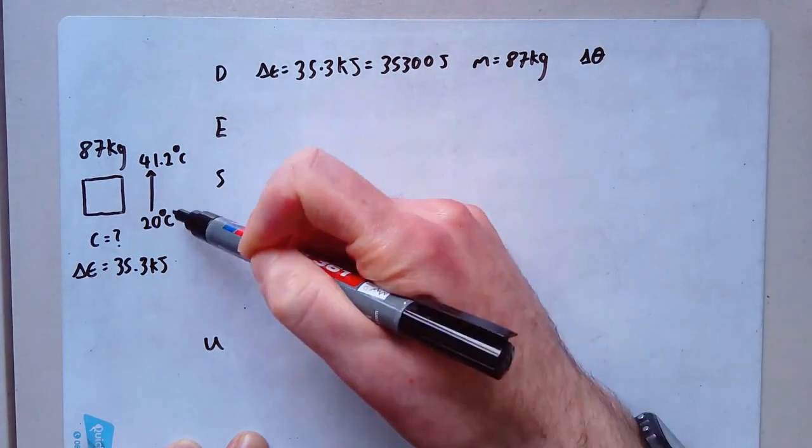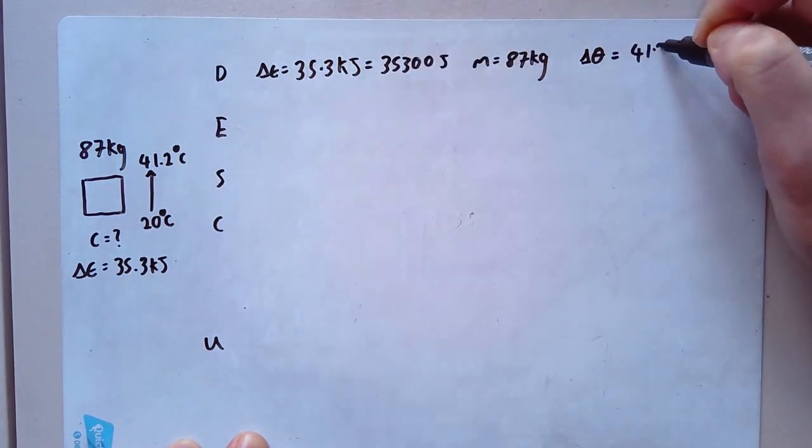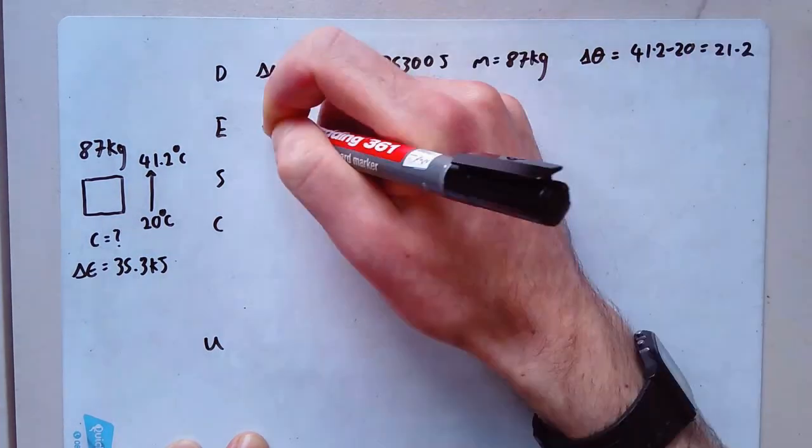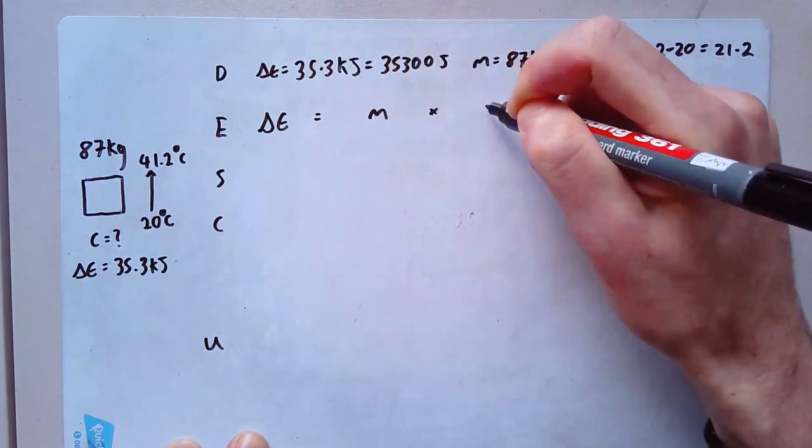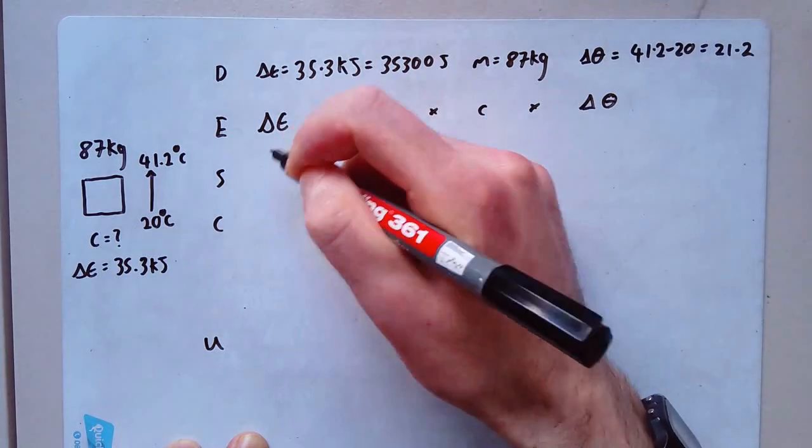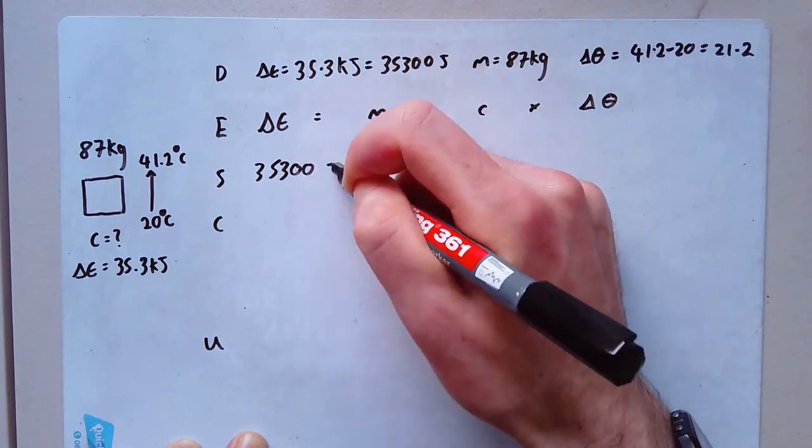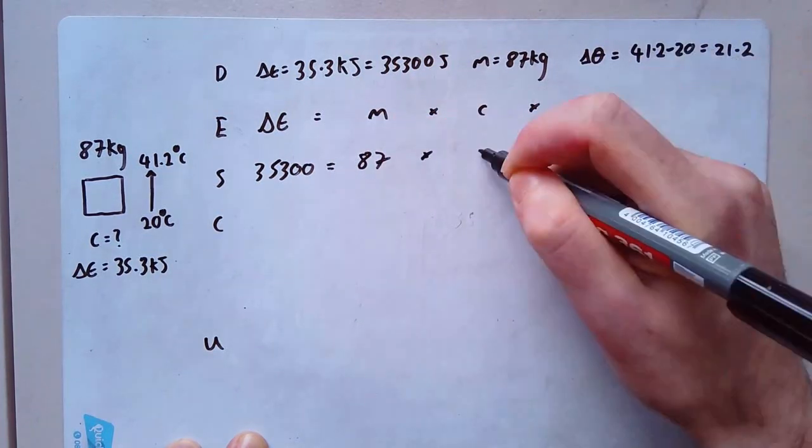My equation delta E equals M times C times delta theta. Let's substitute. I get 35,300 equals 87 multiplied by C, which I don't know yet, multiplied by 21.2.